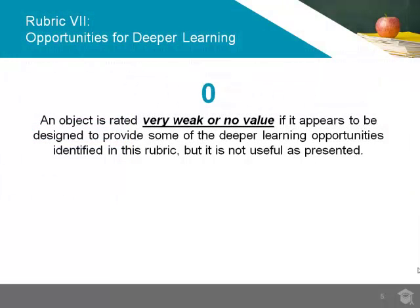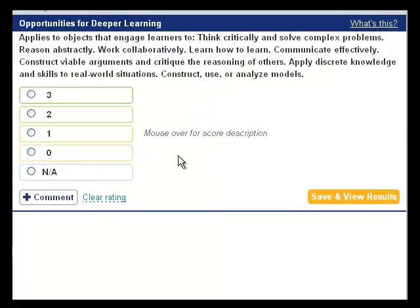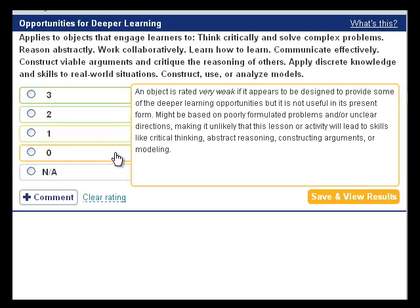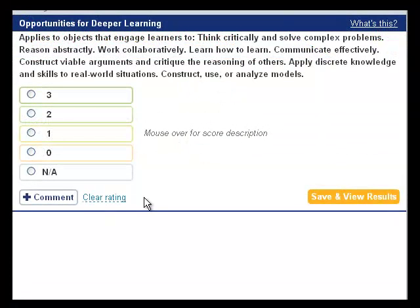An object is rated very weak, or of no value for this rubric, if it appears to be designed to provide some of the deeper learning opportunities, but it is not useful as it is presented, and should receive a 0 rating. Remember that for objects not intended to provide opportunities for deeper learning, users should rate that object NA for this rubric.